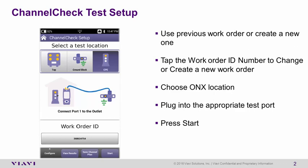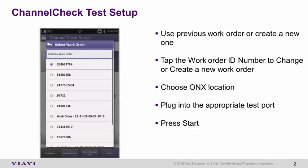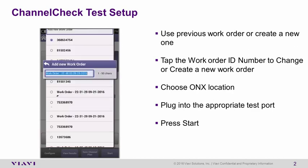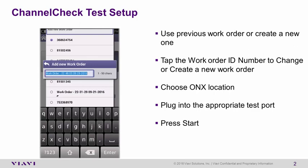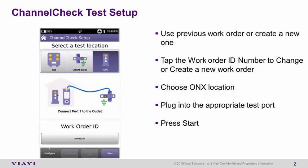In this particular instance we've already selected the CPE equipment and I am connected to test port number one. Previously we built a work order that we utilized for the OneCheck application. We can continue to use that work order, or we'll touch the work order tab here to bring up a screen allowing me to add a new work order. It will default to the current date and time stamp, and I'll wipe out that field, put in our account information, and hit enter.